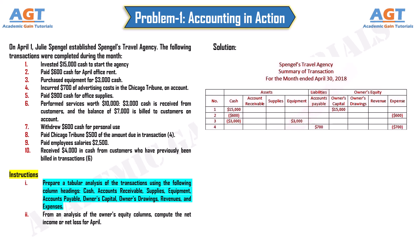Transaction 4: incurred $700 of advertising costs in the Chicago Tribune on account. Liabilities in the form of accounts payable increase by $700. Transaction 5: paid $900 cash for office supplies. Assets in the form of cash decrease by $900, and assets in the form of supplies increase by $900.